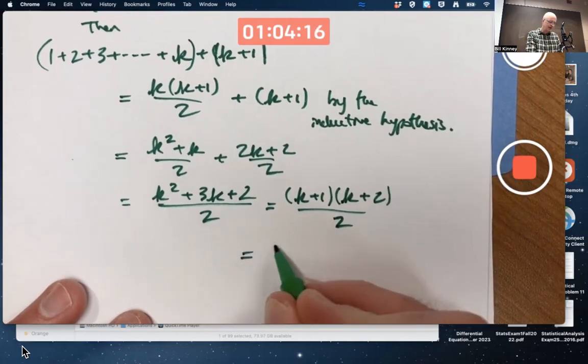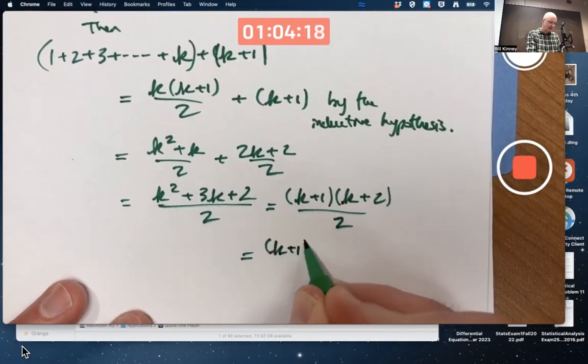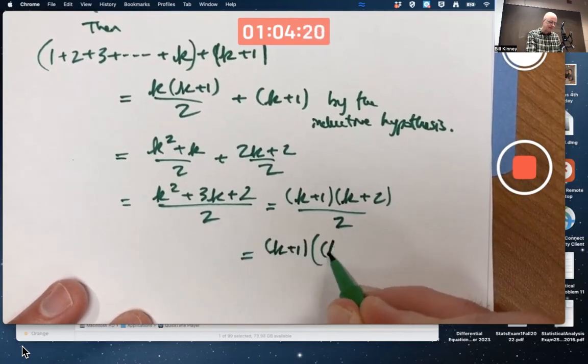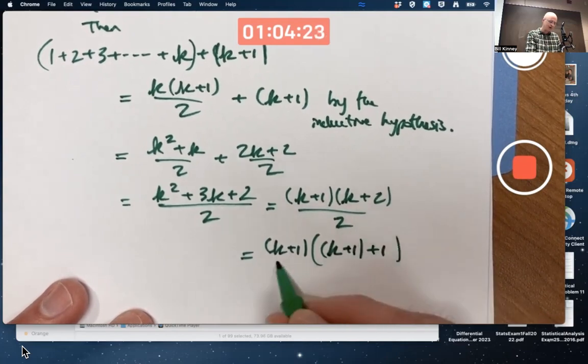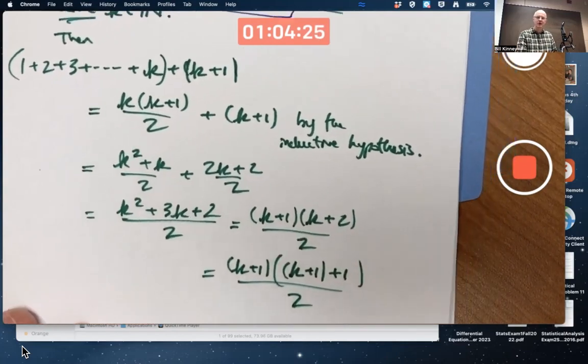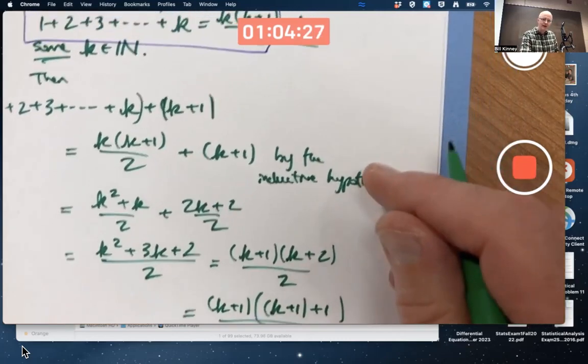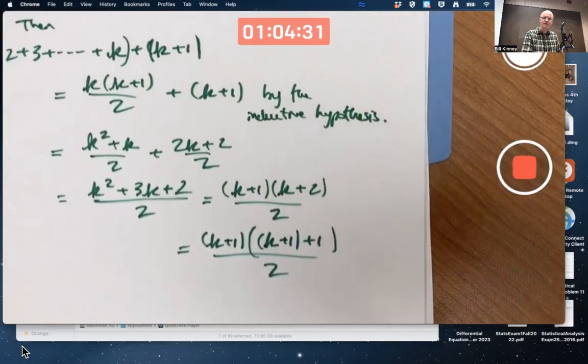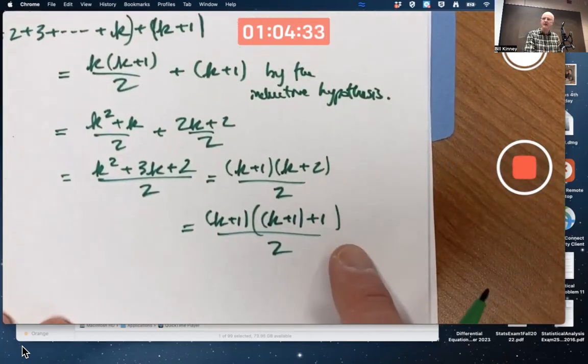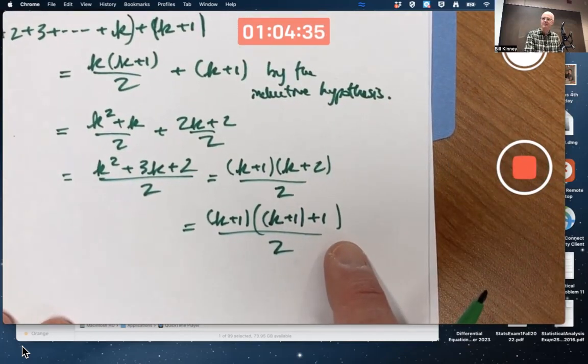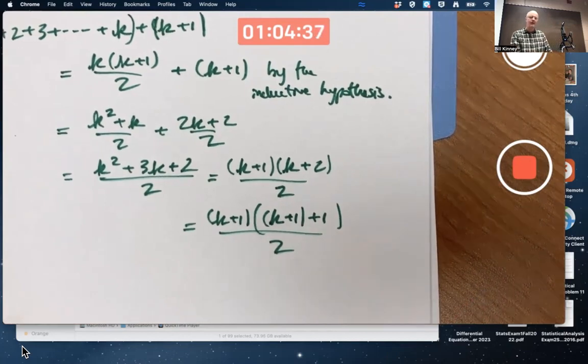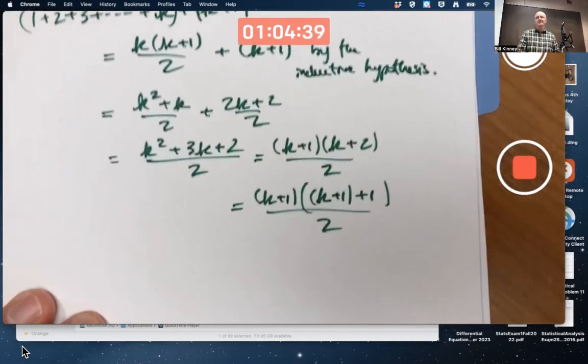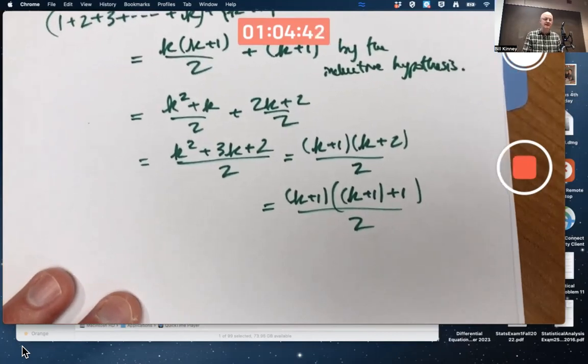For extra emphasis, you could write k plus 1 times in parentheses k plus 1 plus 1 all over 2, showing that it's got the right form. It does look like the right-hand side there when k gets replaced by k plus 1. I wouldn't care if you showed that last step there or not. We're not quite done.